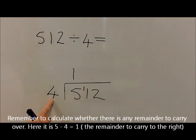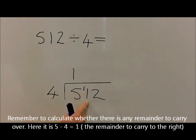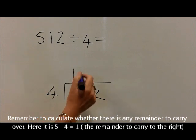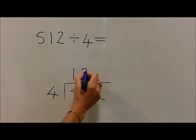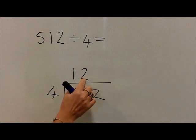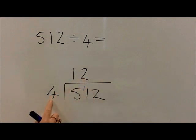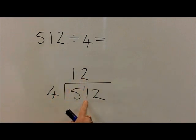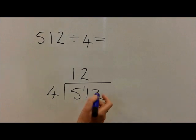We now ask the question how many 4's are in 11. Children should know that 2 times 4 is 8. We've got 11, take away 8, therefore we've got 3 left over to carry.